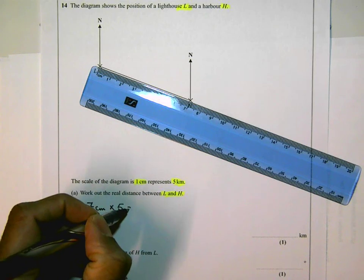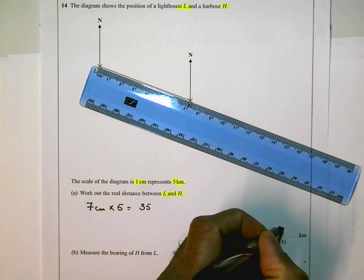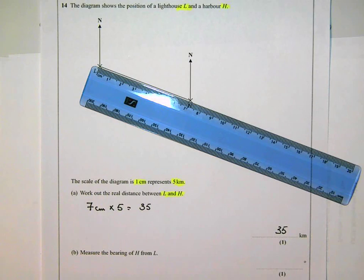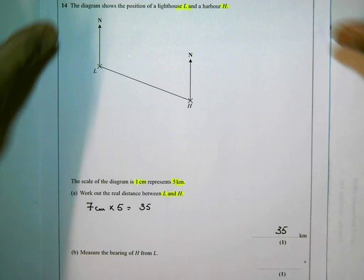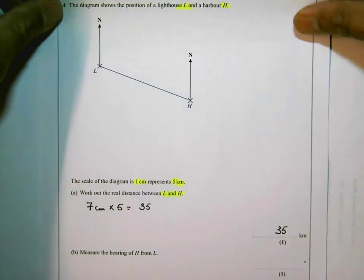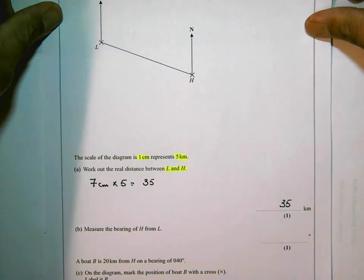So if I times that by five, that gives me 35, and that means the real distance is 35 kilometers. So the real distance between the two is 35 kilometers. What I'm going to do next is the bearings part of the question, and I'm going to move this up a bit.